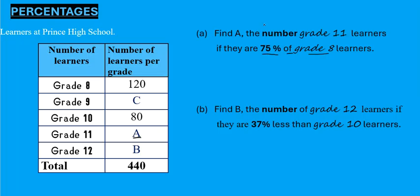Here's a golden rule. If you've got a number with a percentage sign, change that percentage to a fraction. The way you do that, you put it over 100. So the 75% becomes 75 over 100. Always start there — change the percentage to a fraction.